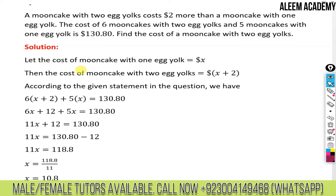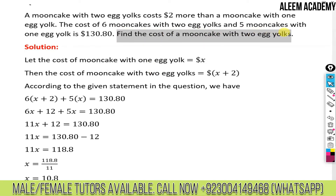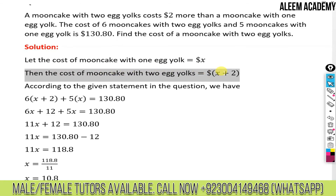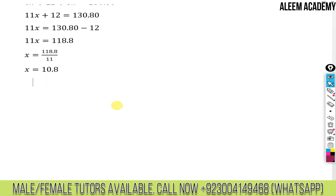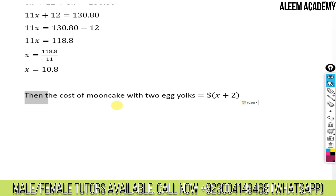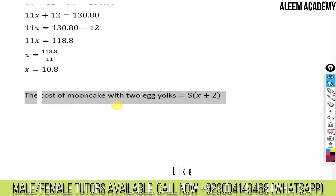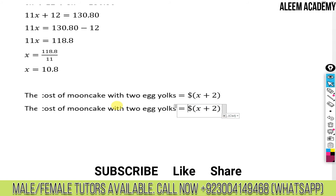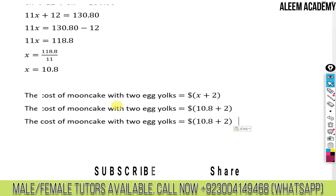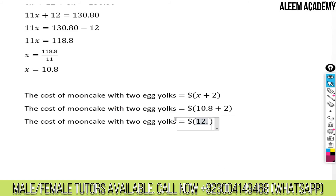x is the cost of a mooncake with one egg yolk. But we need to find the cost of a mooncake with two egg yolks, which is x plus two. Substituting x = 10.8, we get 10.8 plus 2 equals 12.8. So $12.80 is your final answer. Thank you very much for your time — stay blessed!